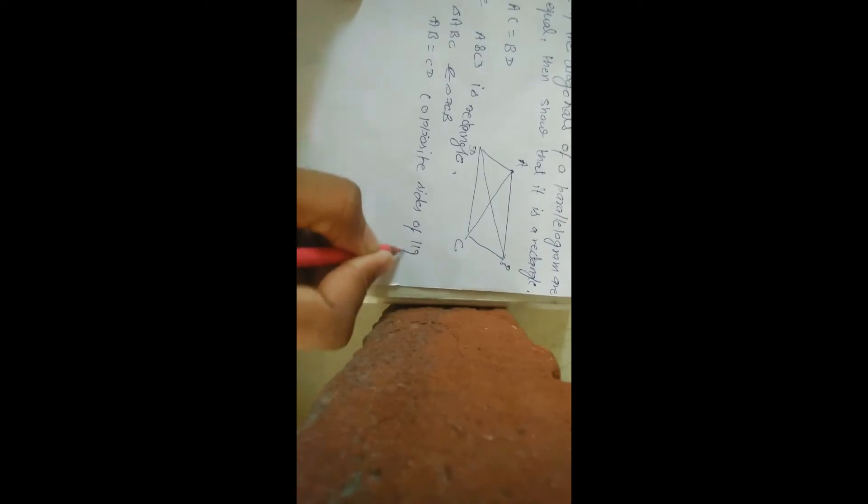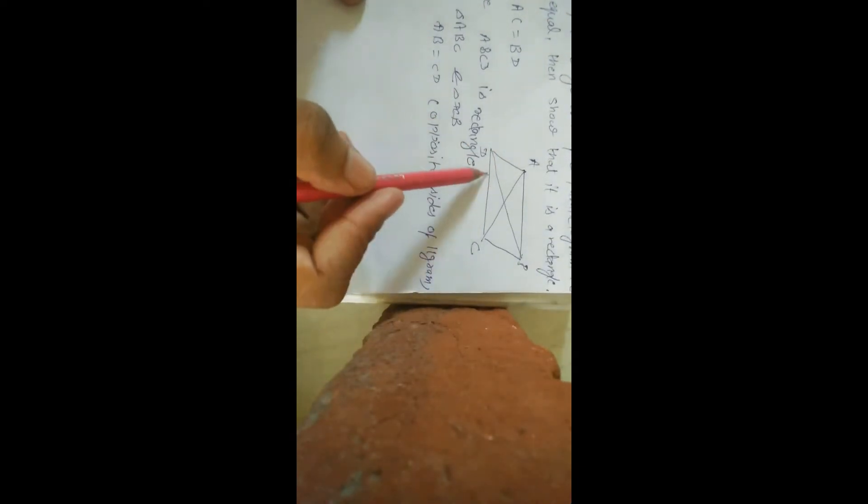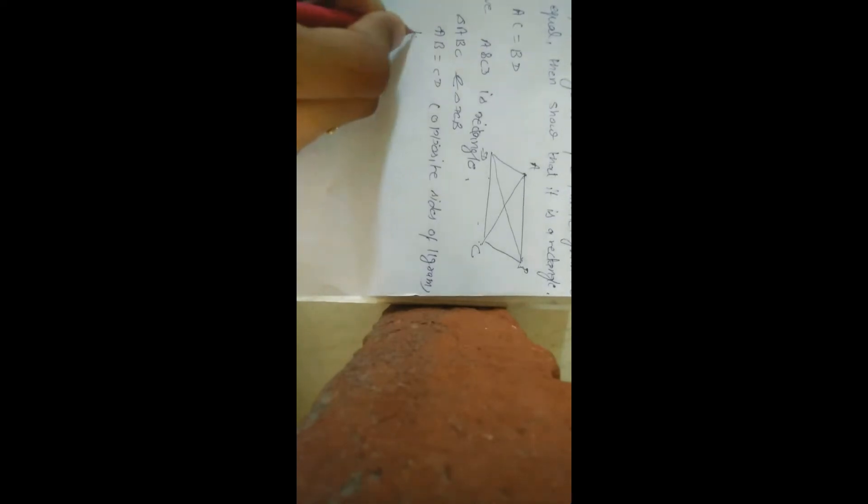We compare triangles ABC and DCB. AB equal to CD because opposite sides of parallelogram. BC equal to BC common. AC equal to BD given. If three things are equal, then what do we call it? Triangle ABC is congruent to triangle DCB by side-side-side.